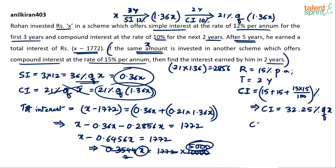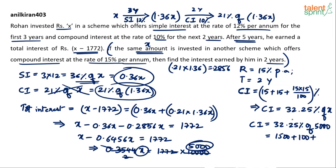The final answer is CI equals 32.25% of 5000. Breaking it down: 30% of 5000 is 1500, 2% of 5000 is 100, so that's 1600. Then 0.25% of 5000: since 1% of 5000 is 50, so 0.25% is 50 divided by 4, which is 12.5. Therefore 1600 plus 12.5 gives a final answer of 1612.5.